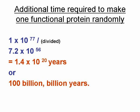Based on our calculation, we would still require considerably more time to cover the period necessary to form one functional small protein, despite the extremely generous and improbable hypothesis in favor of mutation and evolution. That is 1 × 10^77 divided by 7.2 × 10^56 equals 1.4 × 10^20 more years, or 100 billion billion more years.